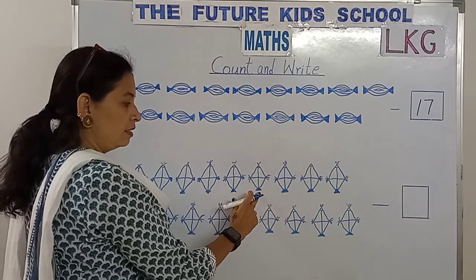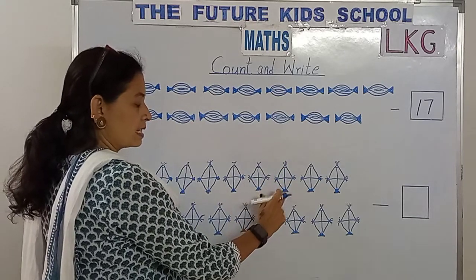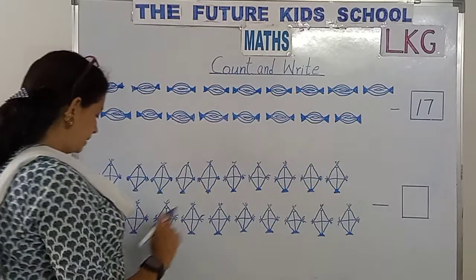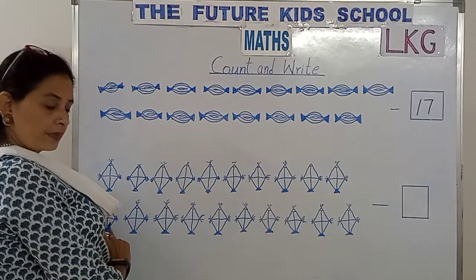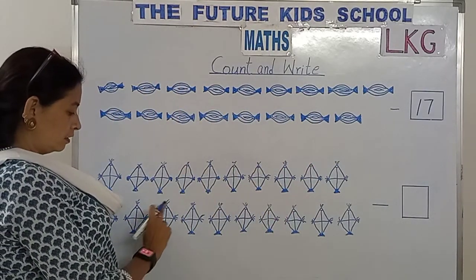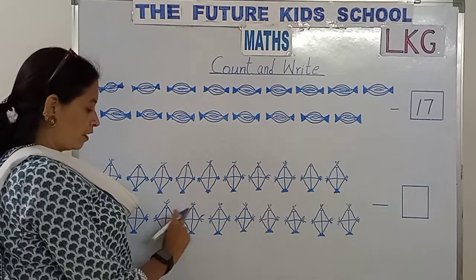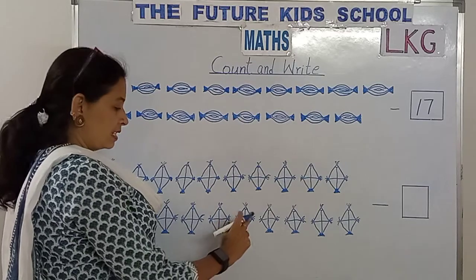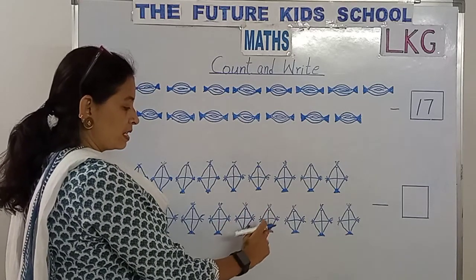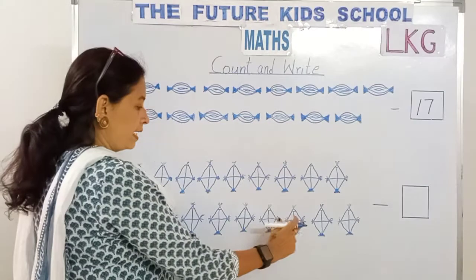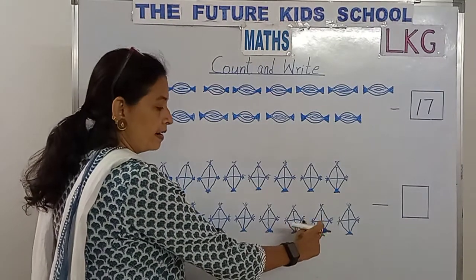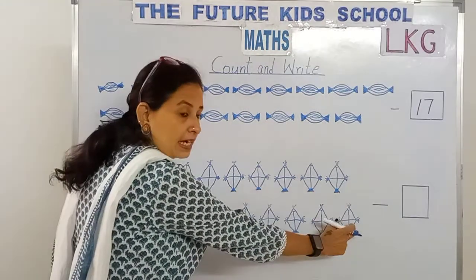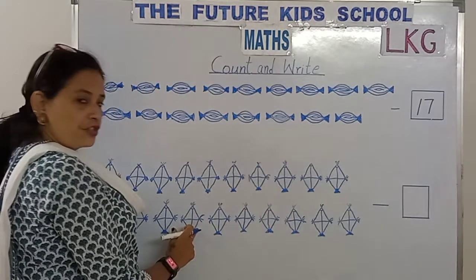7, 8, 9, 10, 11, 12, 13, 14, 15, 16, 17, 18, 19, 20. How many kites do we have here, children?